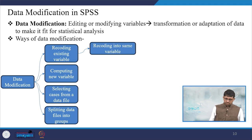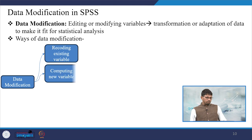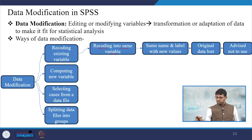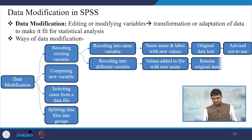Data modification includes recoding the existing variable or computing new variables, selecting cases from data file, or splitting data files into groups. Recoding into the same variable means the original data is lost and is advised not to use. Recoding into different variable adds a new variable with a new name while retaining the original.